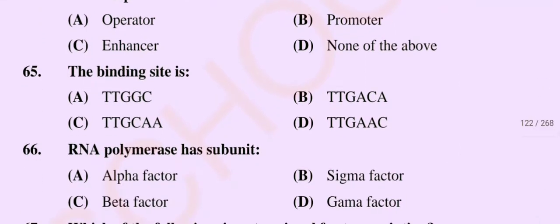Question number 65: The binding site is — Option A: TTGGC, Option B: TTGACA, Option C: TTGC, Option D: TTTAC. So the correct option is Option B, TTGACA.